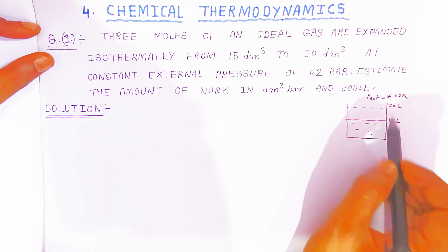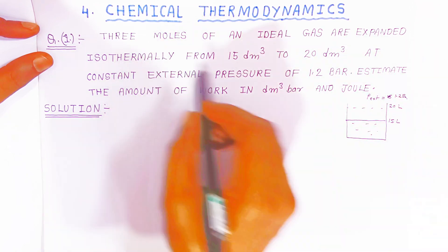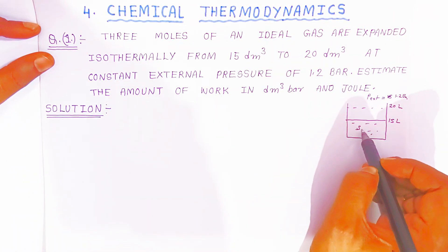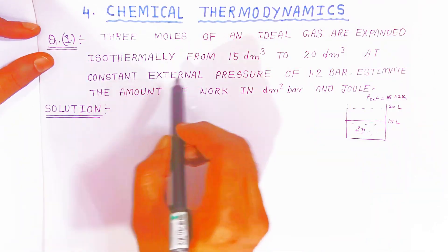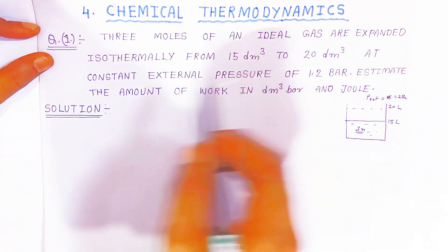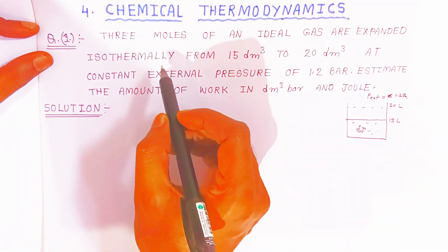In exam students this is not required, only for your sake of understanding I have done the diagram. So three moles of ideal gas, 3 moles of ideal gas are expanded isothermally from 15 dm³ to 20 dm³ at constant external pressure of 1.2 bar.